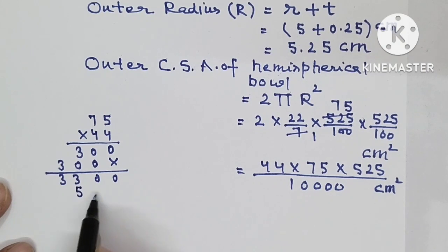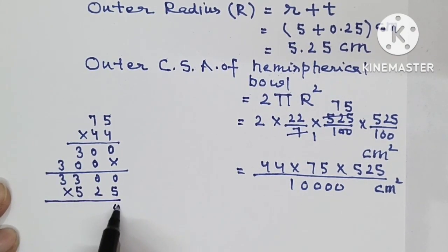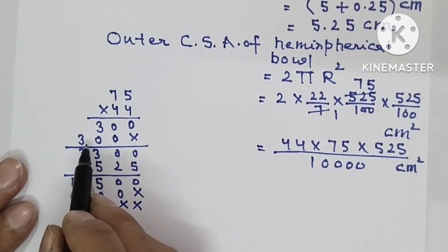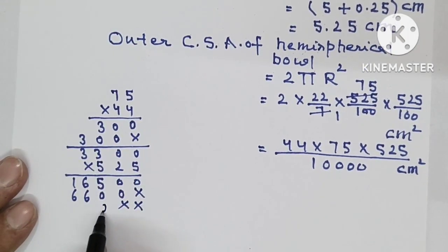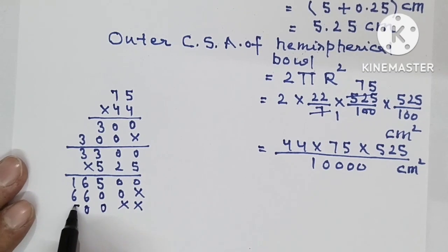Now let's multiply by 525. 5 threes are 15, 1 is carry. 5 threes are 15, 1 is 16. Then 2 threes are 6. Then 5 threes are 15. Adding these together we get 1732500.